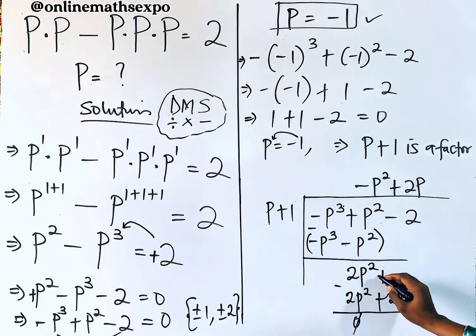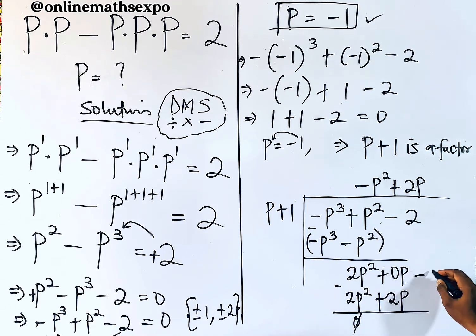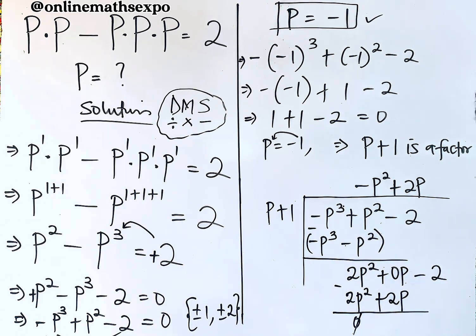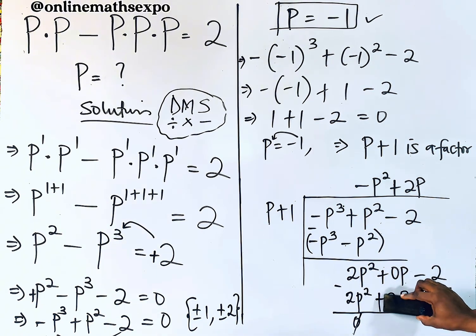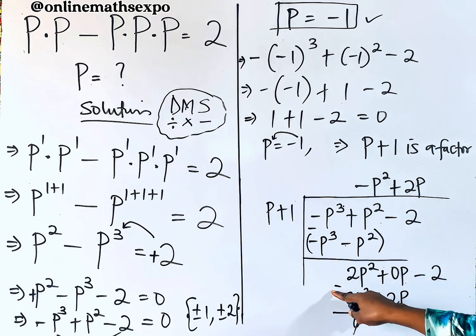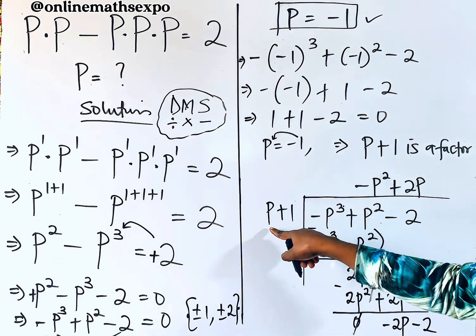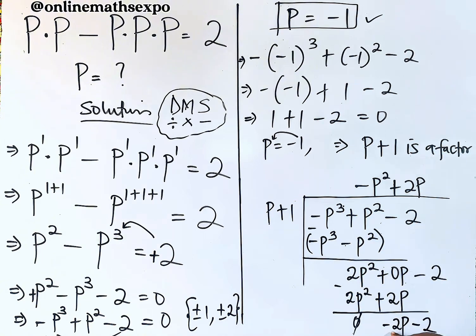There is no p term in the upper part, but we can write it as 0p − 2 without changing anything — the coefficient of p is zero. So 0p minus 2p gives −2p. Bring down the −2.